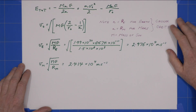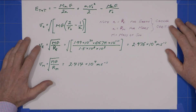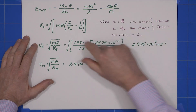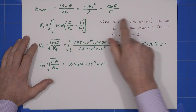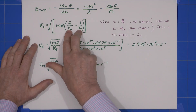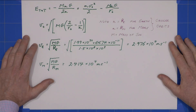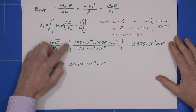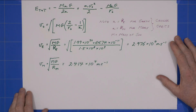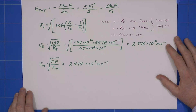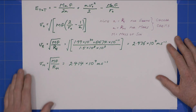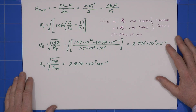To work out the velocity of Earth, I can simply plug r_Earth into both those values and I get this expression, which leads to that value for the speed that Earth is doing.